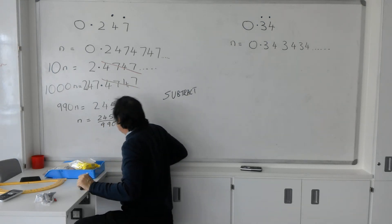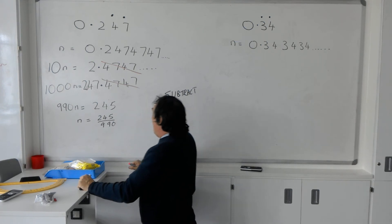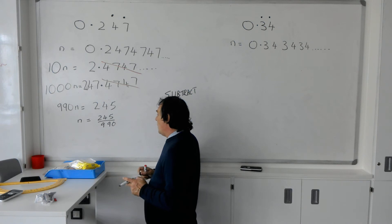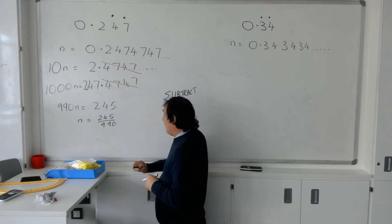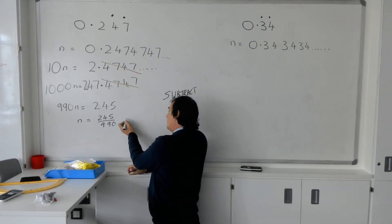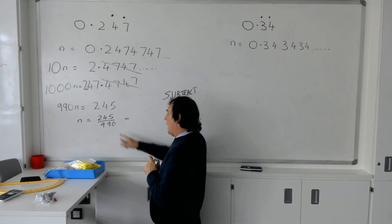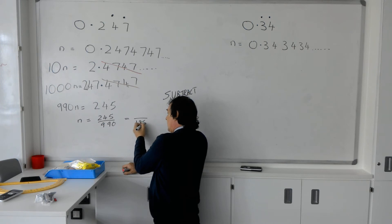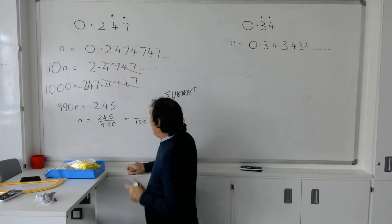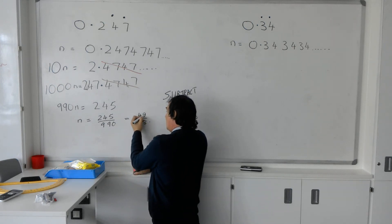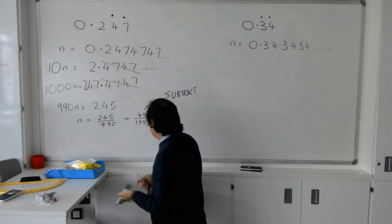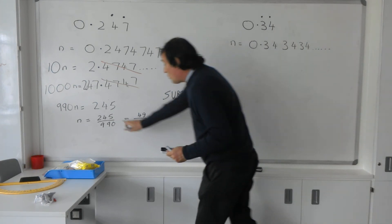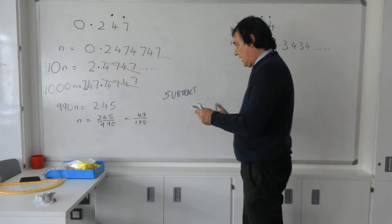The next stage is we could have a look at cancelling it. Both of those will go into fives. So twice 99 gives you 198 on the bottom there, and that would be 49 over 198. It might go further than that still if you check with the calculator, but that's the idea—get your raw fraction and then do your best to cancel it.